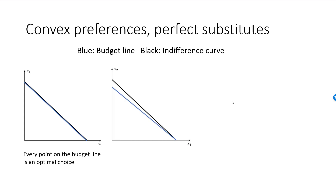In the second illustration, the indifference curve is steeper than the budget line. Here, the optimal bundle will be a boundary bundle, and I will spend all my income on good 1. This would happen, for example, if the consumer was willing to trade two goods in a 1-to-1 ratio with MRS equal to minus 1, and the price of good 1 was lower than the price of good 2. She would then naturally spend her entire income on good 1.